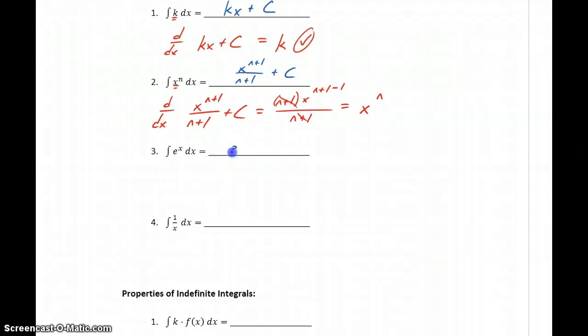The integral of e to the x will just be e to the x plus c. So again, if we take the derivative of e to the x plus c, we'll get e to the x plus 0, which gets us back to that original function we started off with.